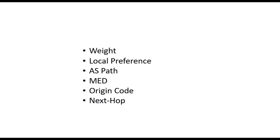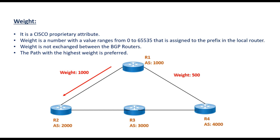The first attribute is weight. Weight is a Cisco proprietary attribute and its value ranges from 0 to 65535. It is assigned to the prefix in the local router and is not exchanged between BGP routers. The path with the highest weight will be preferred. For example, if router 1 has two paths — one through AS2000 and another through AS4000 — and you assign a weight of 1000 to one neighbor, that path will be preferred because it has the highest weight.